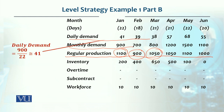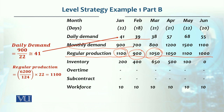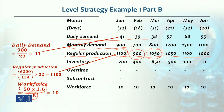The daily demand comes out to 41. Regular production is 6,200 divided by 124, multiplied by 22 days for January, giving 1,100. For workforce requirement, since we need to produce 50 units per day and each unit takes 1.6 hours, and each worker has 8 hours available per day, dividing gives us 10 workers.